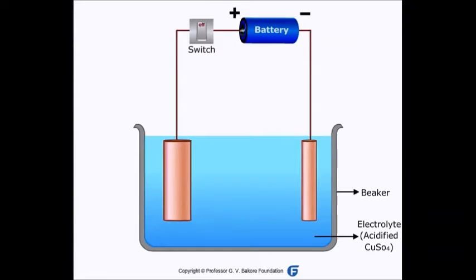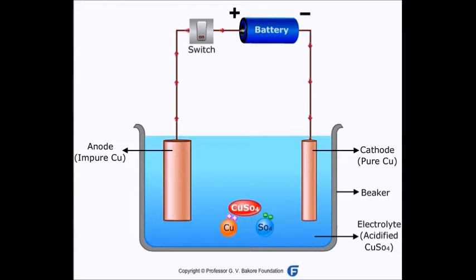The anode is taken as a thick rod made up of impure copper. Cathode is made up of pure copper and it is taken in the form of a thin rod. When current passes, copper sulphate (the electrolyte) dissociates into copper ions and sulphate ions. At the anode, copper atoms lose two electrons to the anode and change into copper ions.